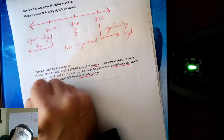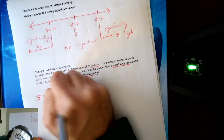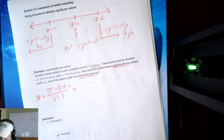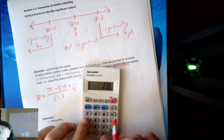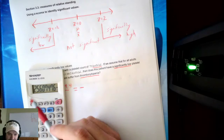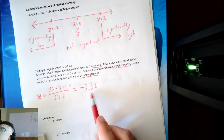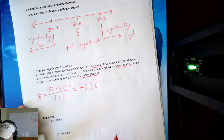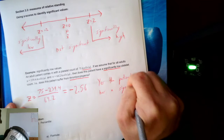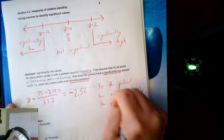I calculate z equals 75 minus 239.4 over 64.2. That gives me negative 2.56 — remember, we always round to two decimal places. Is that significantly low? Yes, negative 2.56 is smaller than negative 2, so the patient has a significantly low platelet count.